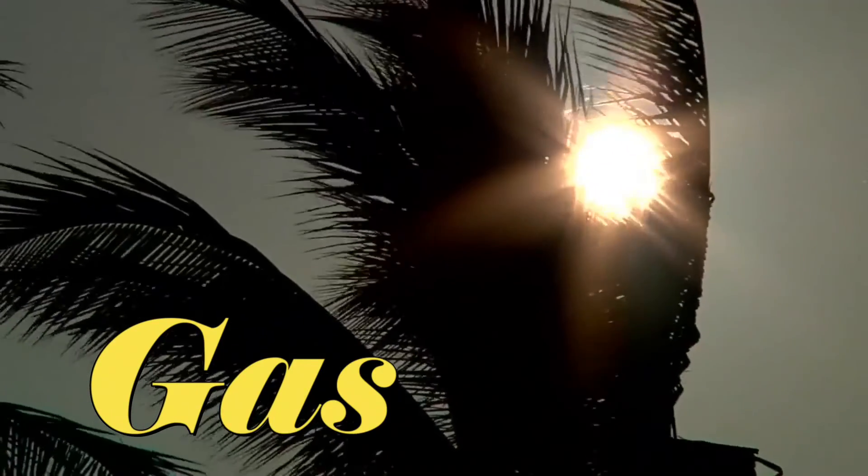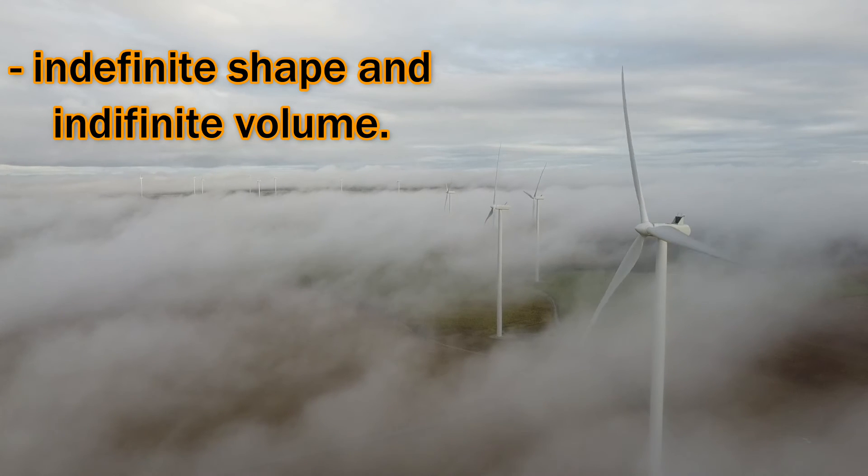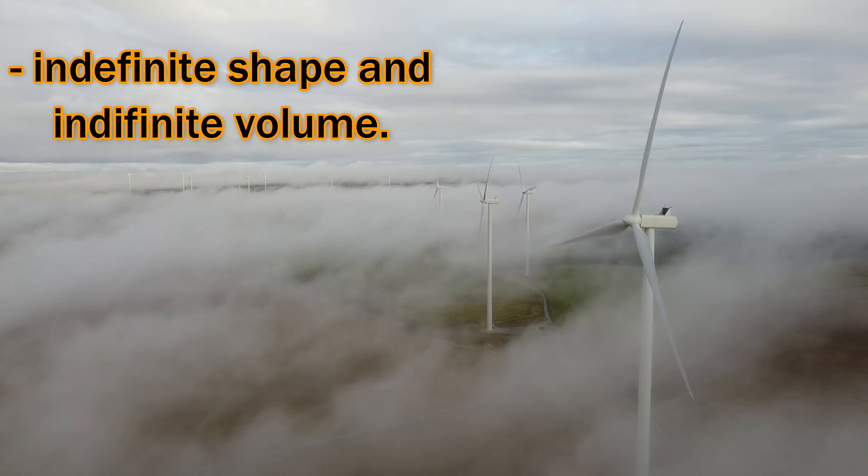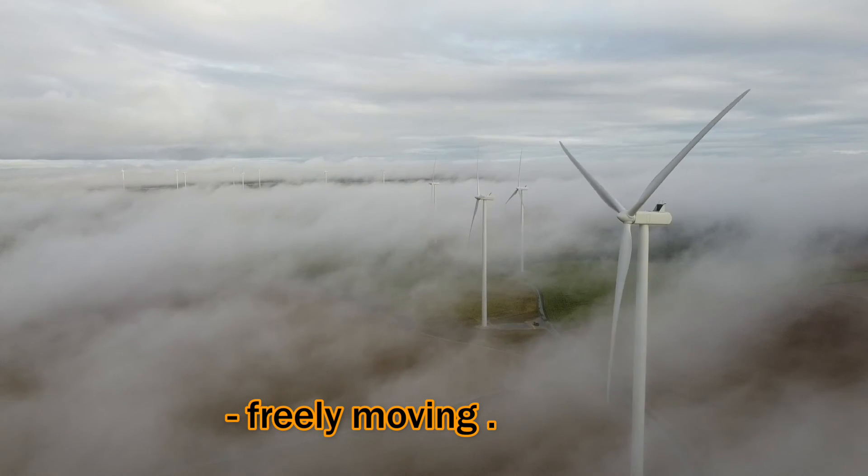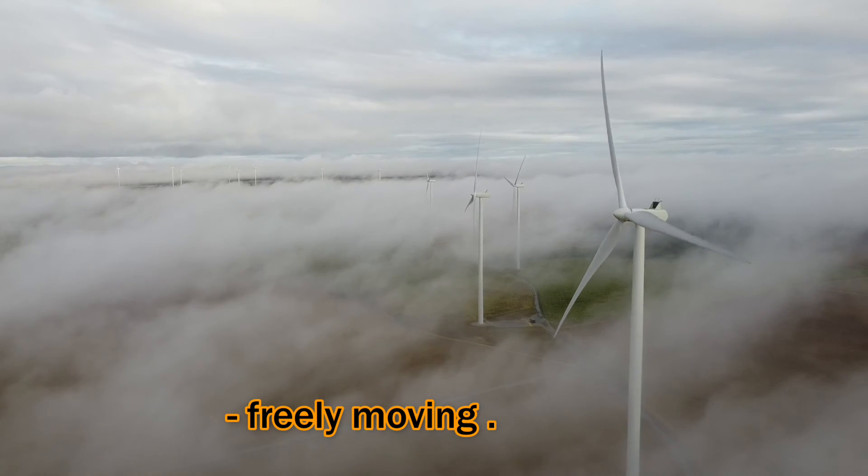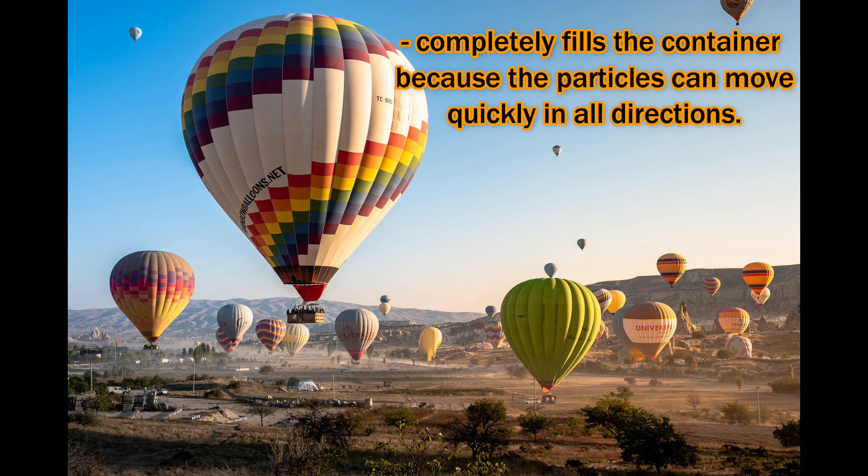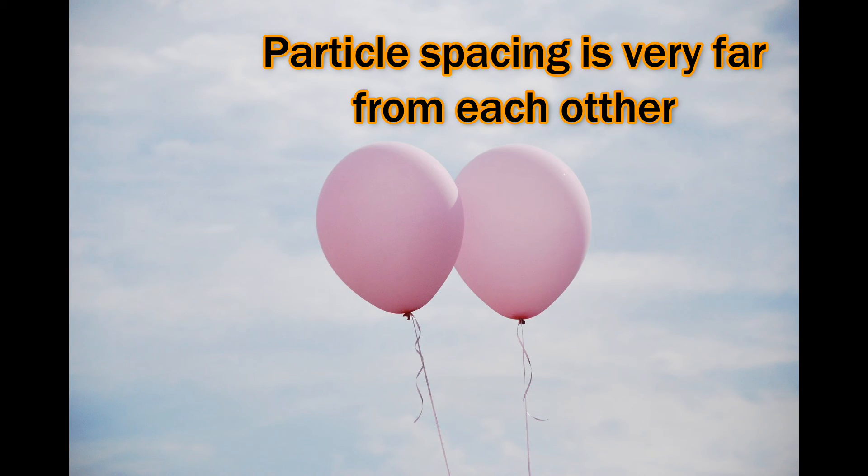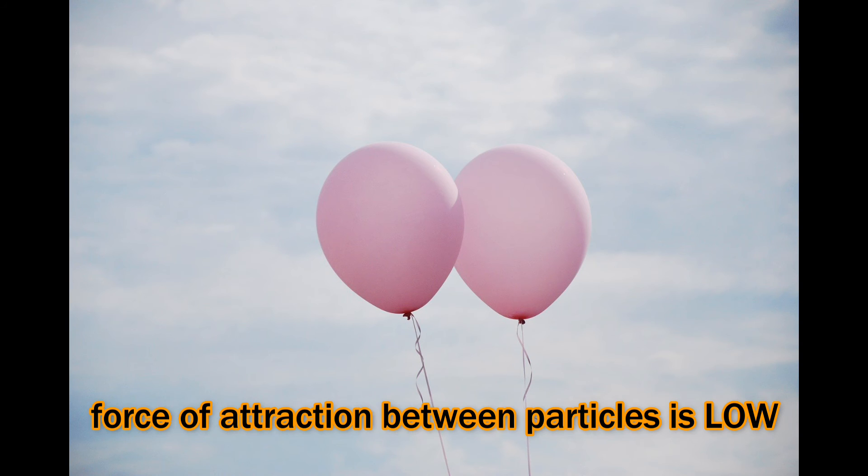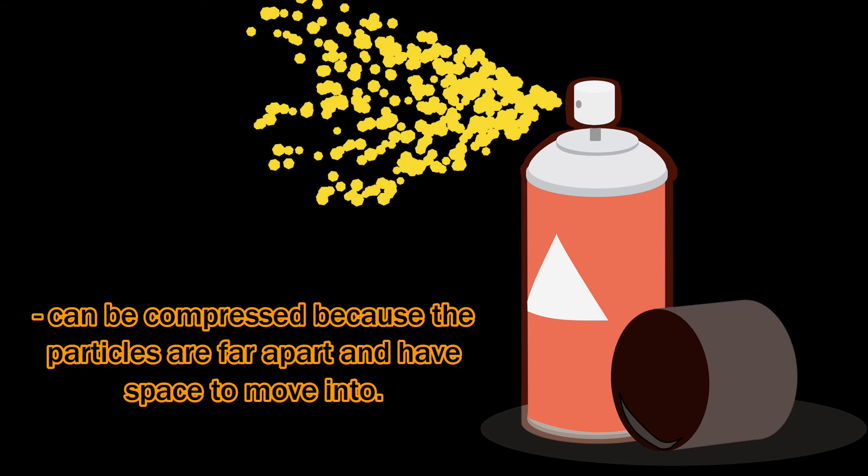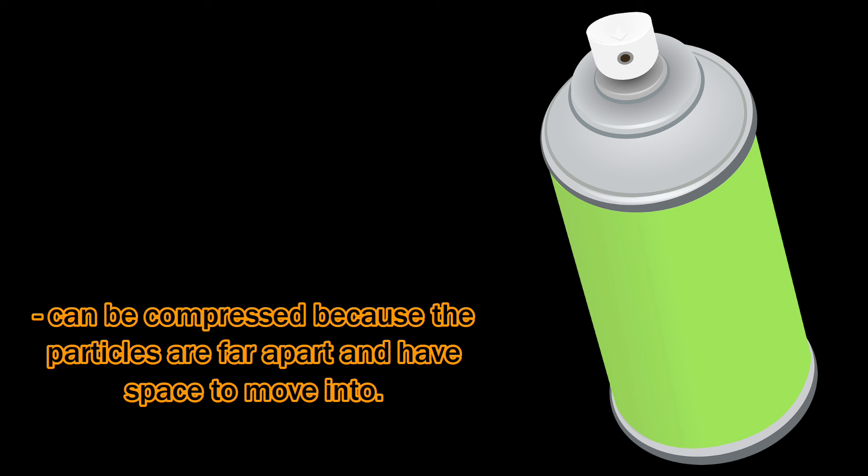The third state of matter is gas. Gas has indefinite shape and indefinite volume. The movement of particles in gas can be bouncing or they can freely move to one another. Gas can completely fill the container because the particles can move quickly in all directions. Particle spacing in gas is very far from each other. Forces of attraction between the particles of gas is low. Gas can be compressed because the particles are far apart and have space to move into.